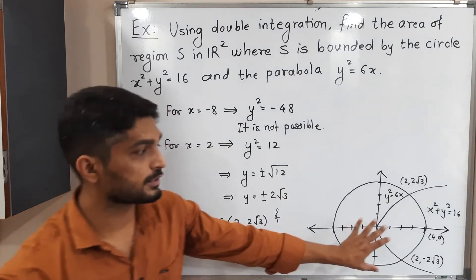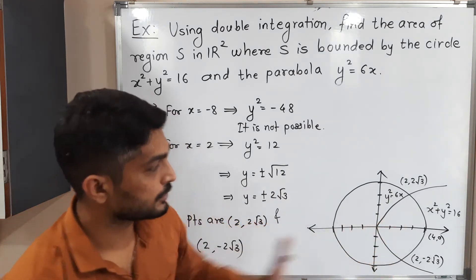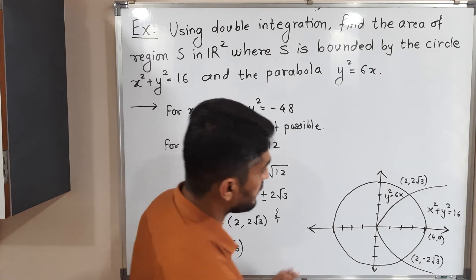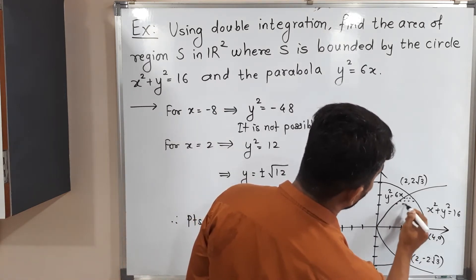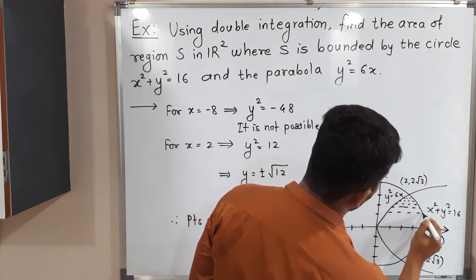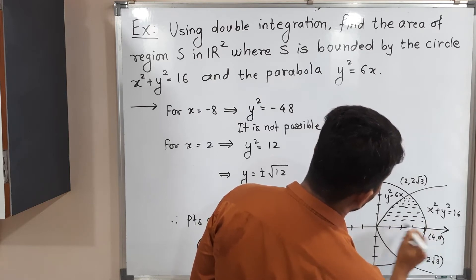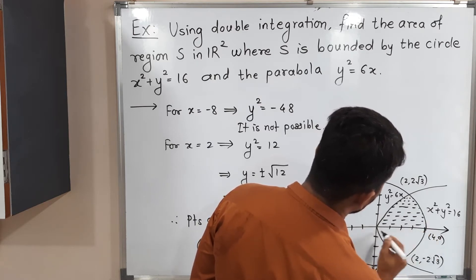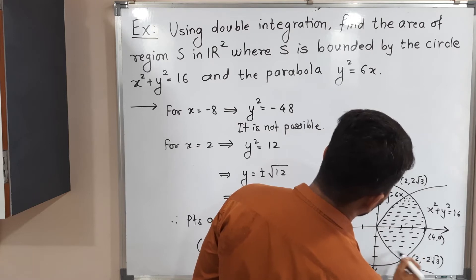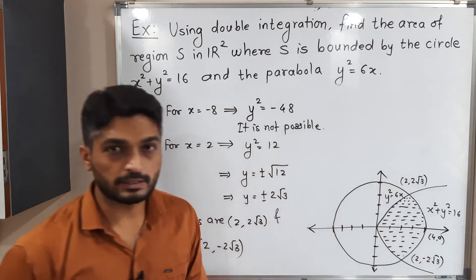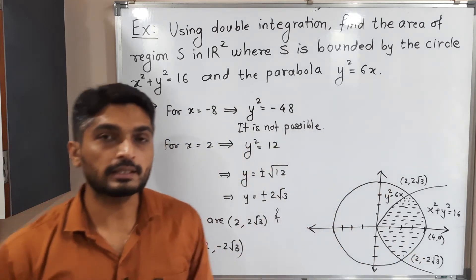Let me show both points on the sketch: (2, 2√3) and (2, -2√3). The region of integration is bounded by both the circle and the parabola.